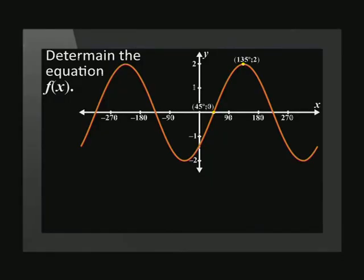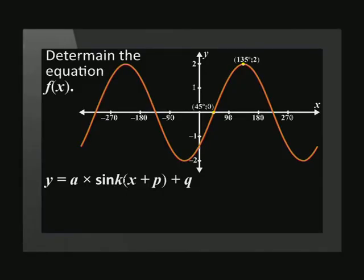Now let's try this in reverse. Sometimes we are given a graph and have to determine its equation. Determine the equation of f(x), given that the coordinates (45°, 0) and (135°, 2) lie on the graph. Looking at the shape, we can tell that the function is a positive sine graph, so we write out y equals a times sine k into brackets x plus p plus q.